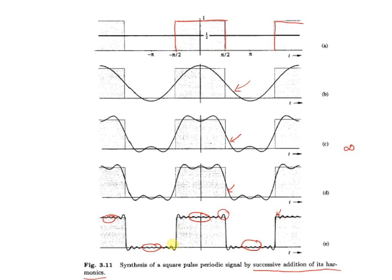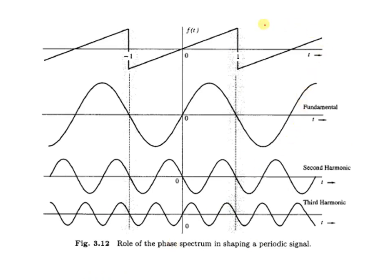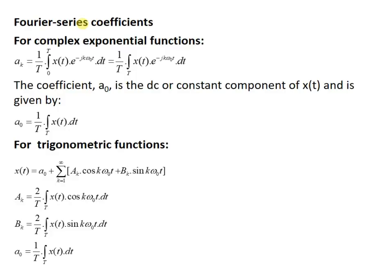In the practical domain, similarly, if we have a sawtooth wave, we use sinusoidal waves of not only a particular phase but of different phases to reconstruct a given signal. So both the amplitude and the phase are involved in the reconstruction of a periodic signal. Fourier series coefficients — I hope everyone knows how to get the Fourier series coefficients.